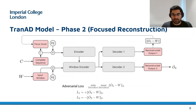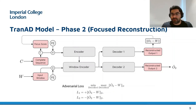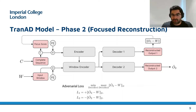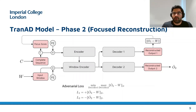Specifically, the second decoder aims to distinguish between the input window and the reconstruction generated by the first decoder in phase 1, which is O1, by maximizing the difference between O2-hat and W. On the other hand, the first decoder aims to fool the second decoder by creating a degenerate focus code — a zero vector — by perfectly reconstructing the input so that O1 equals W.